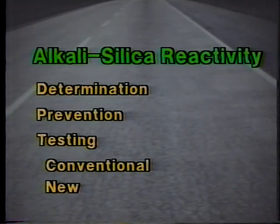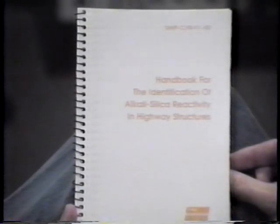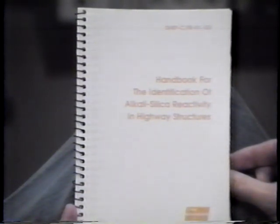Determination. As you know, cracking in concrete can be caused by a number of factors. Fortunately, the types of cracks and their locations can give you a good indication of the specific cause. In addition, evidence of the gel-like material is a sure indication of ASR. If you suspect ASR, the first thing you should do is review the Handbook for the Identification of Alkali Silica Reactivity in Highway Structures. In it, you'll find detailed descriptions of crack patterns normally associated with ASR.